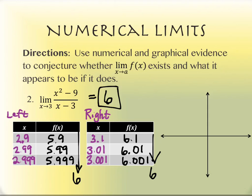The directions say to use numerical and graphical evidence. From the numerical — table — point of view, we've conjectured the limit is 6. Now from the graph: in a standard window, this looks like a straight line. Tracing close to x equals 3, y values get close to 6 on both sides. Why? If we factor the numerator, x² - 9 = (x-3)(x+3), and the (x-3) cancels with the denominator, giving us y = x + 3 — a line with a hole at x equals 3.